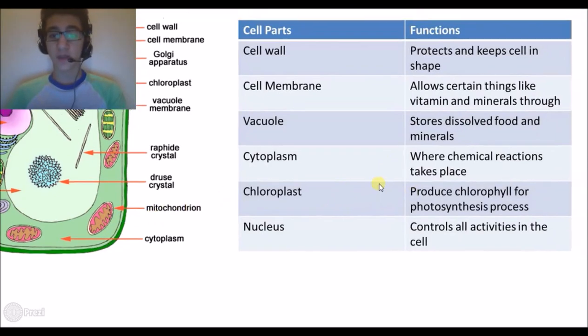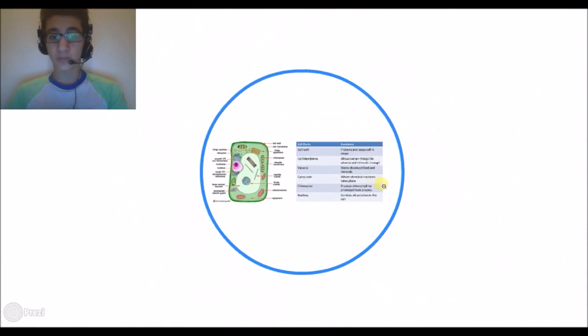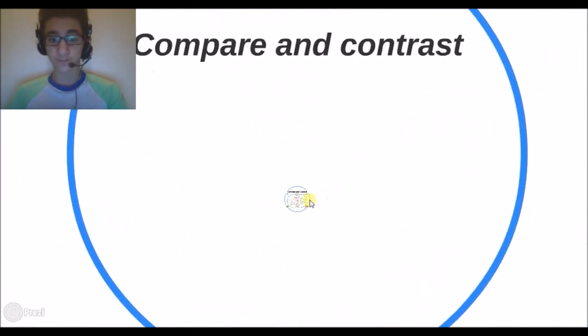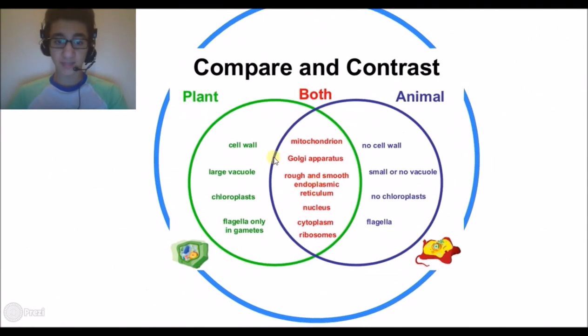We'll go to the compare and contrast. The plant cell has a cell wall, large vacuole, chloroplast, flagella only in gametes. They both contain mitochondria, Golgi apparatus, rough and smooth endoplasmic reticulum, nucleus, cytoplasm, and ribosomes.